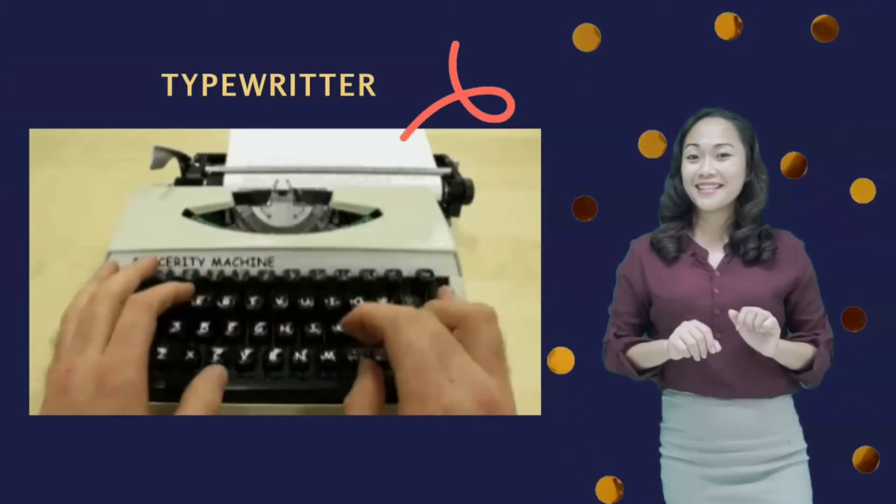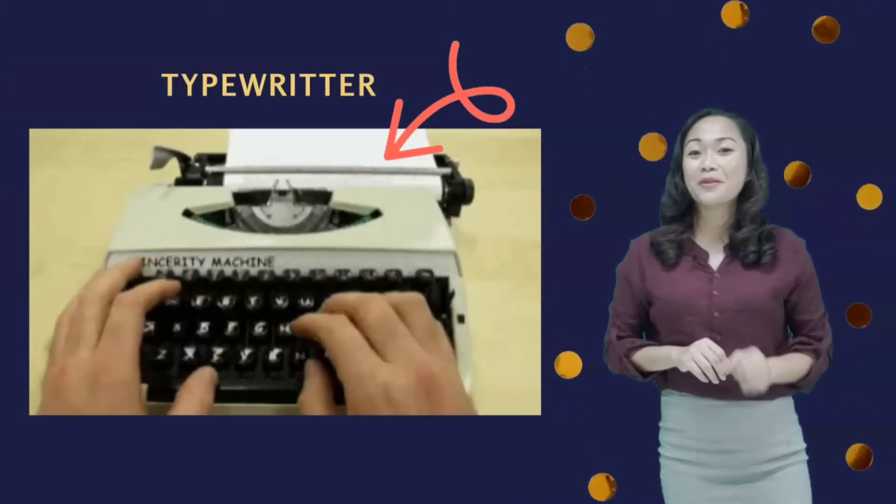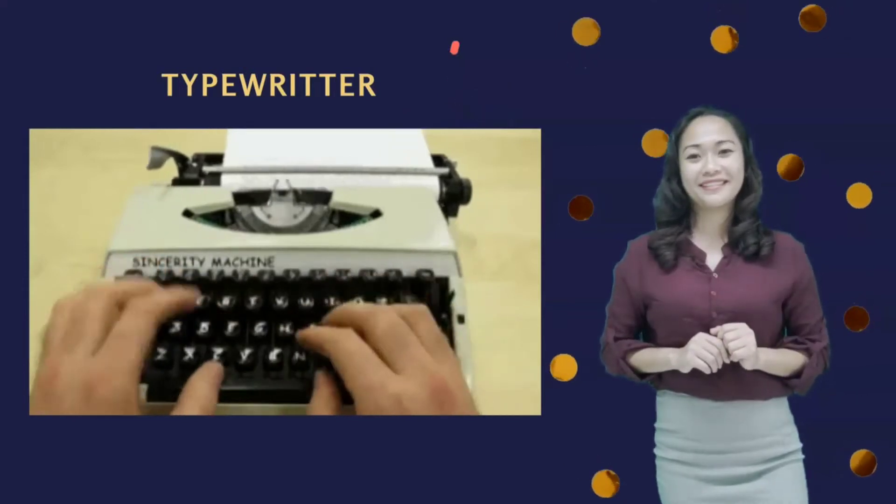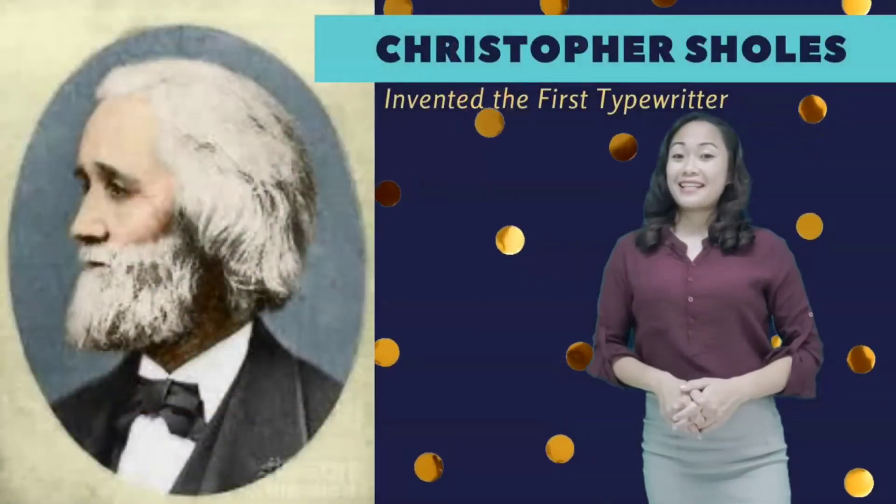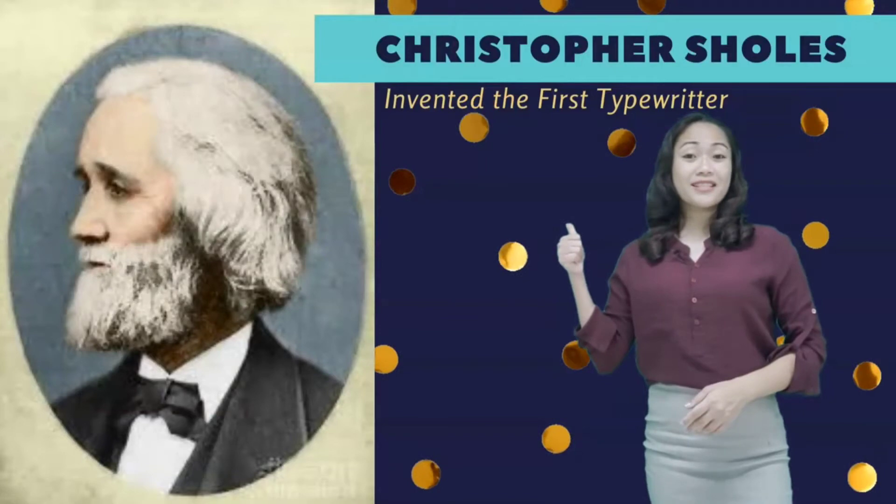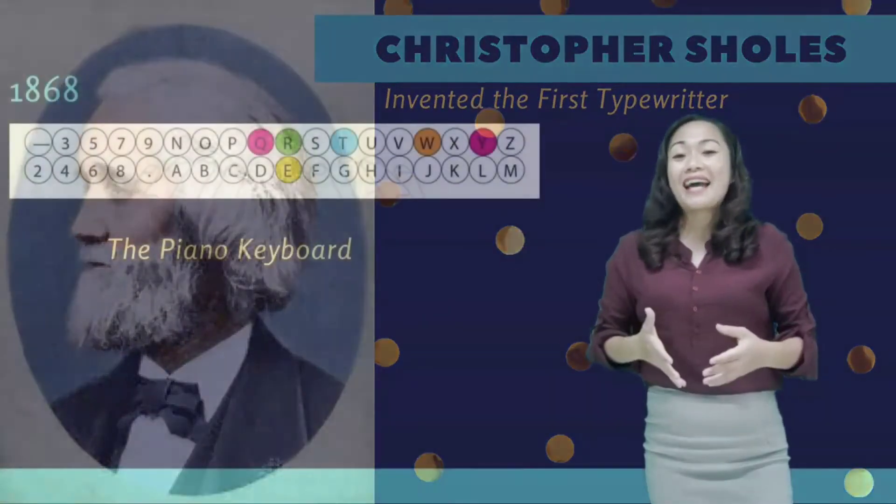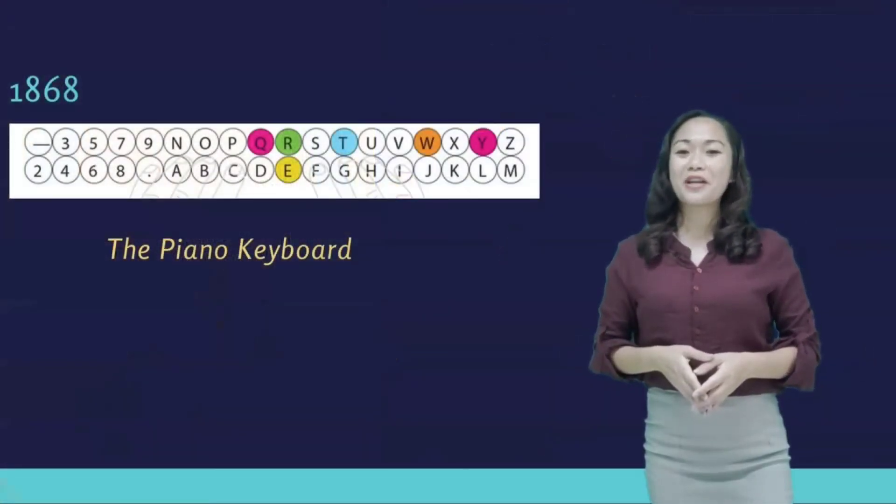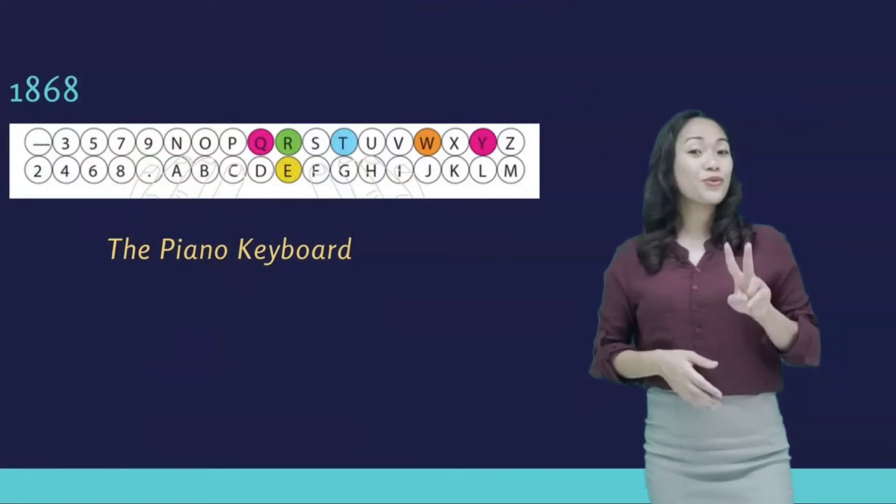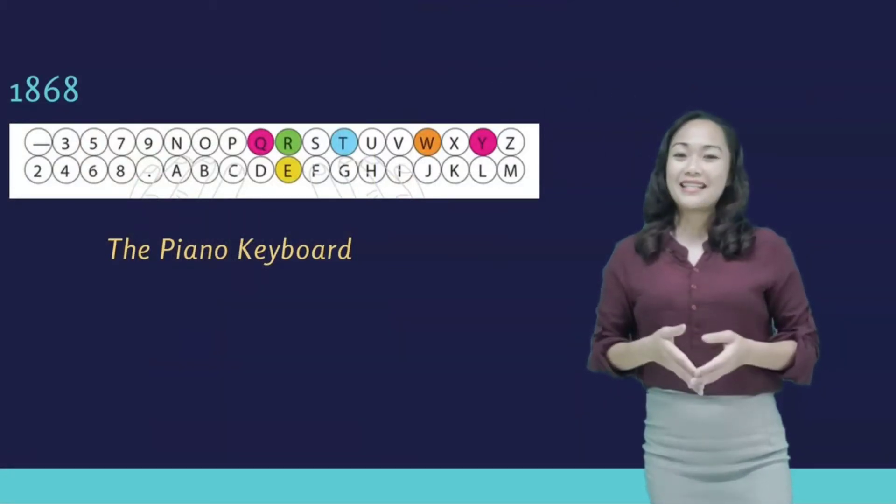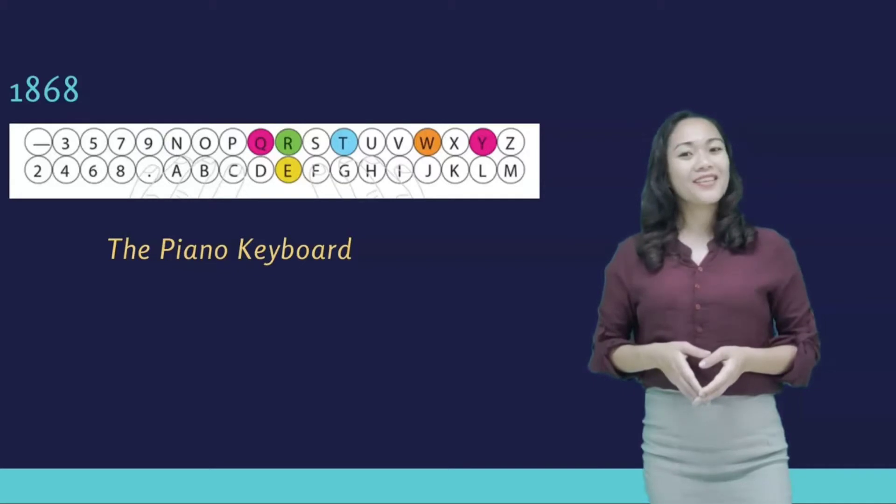While typing the text, levers hit the paper one by one. In 1868, Christopher Scholes invented the first typewriter, and it had the alphabetical arrangement of letters within two rows, also known as a piano-style keyboard.